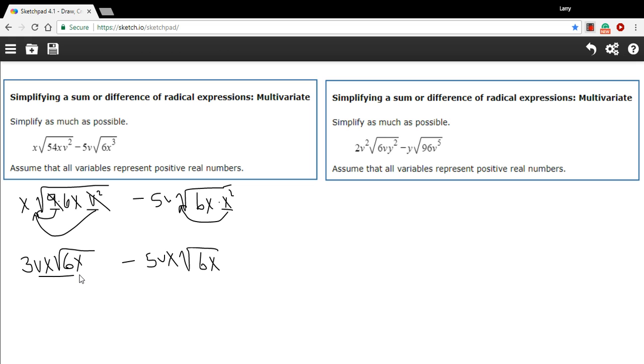And this is really nice because our like terms here, we have 3vx√6x and a negative 5vx√6x, so 3 minus 5 is a negative 2vx√6x. That is quite a bit more simple, even though it still looks kind of complicated, but quite a bit more simple than what we started with up here.